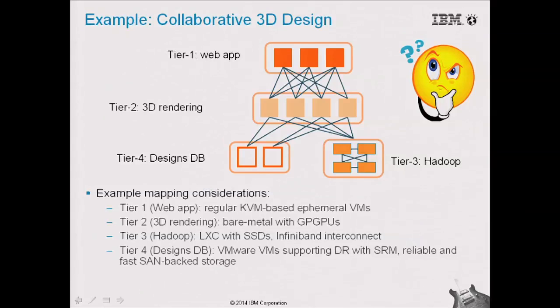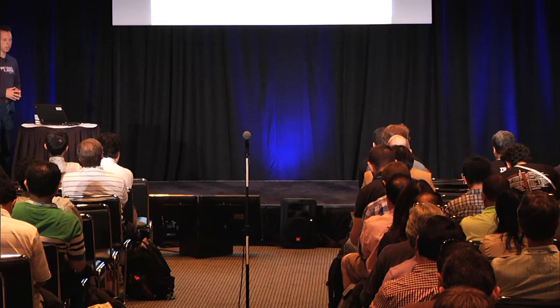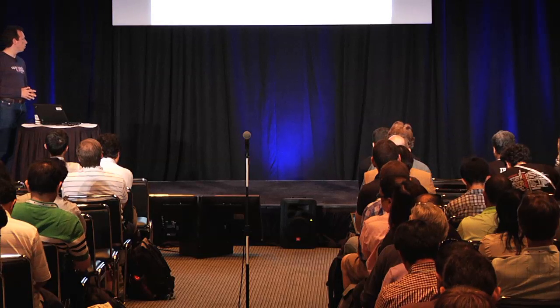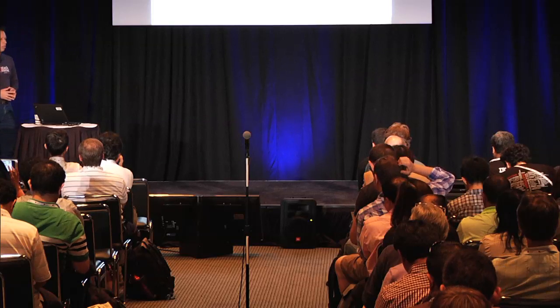To illustrate the different configurations and how they can be used by an application, here is an example of an application with four tiers, each tier optimized to run on a certain virtual or physical hardware configuration. We have a web tier, a 3D rendering tier, a Hadoop cluster, and a database tier. The different tiers can be configured and deployed in the cloud: KVM-based virtual machines, bare metal machines with GPUs for rendering, SSDs and InfiniBand for Hadoop, and SAN-based storage for databases. The idea is to have all those options together with the user experience that a cloud user expects.